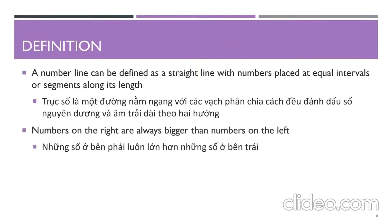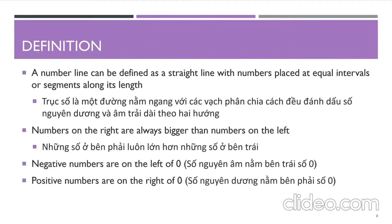Numbers on the right are always bigger than the number on the left. Negative numbers are on the left of zero. Positive numbers are on the right of zero.